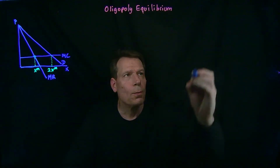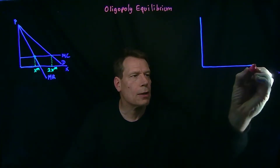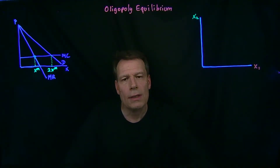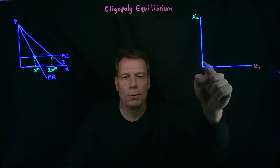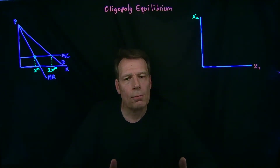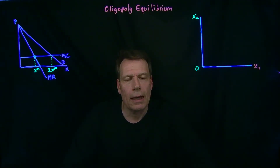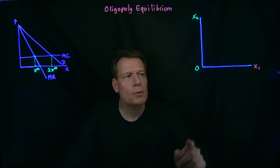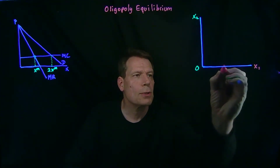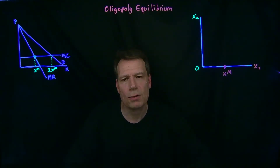So just a recap. We derive the picture where we put the quantity that firm 1 produces on the horizontal axis and the quantity that firm 2 produces on the vertical axis. We then asked, for different quantities that firm 2 might produce, what is firm 1's best response quantity? So if firm 2 is producing nothing, for example, then firm 1 would be a monopoly and would produce the monopoly quantity. That gives us one point on firm 1's best response function.